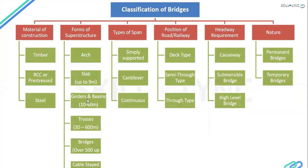Regarding headway requirements and nature: these come into picture after finalizing all other classification aspects — material, form, type of span, and position. It can be a causeway, a submersible bridge, or a high-rise bridge like viaducts. Based on the earlier classification, we decide which type of headway requirement is needed. For the nature of the bridge, it is either permanent — like the bridges we see while traveling on roads — or temporary, like a pontoon bridge.